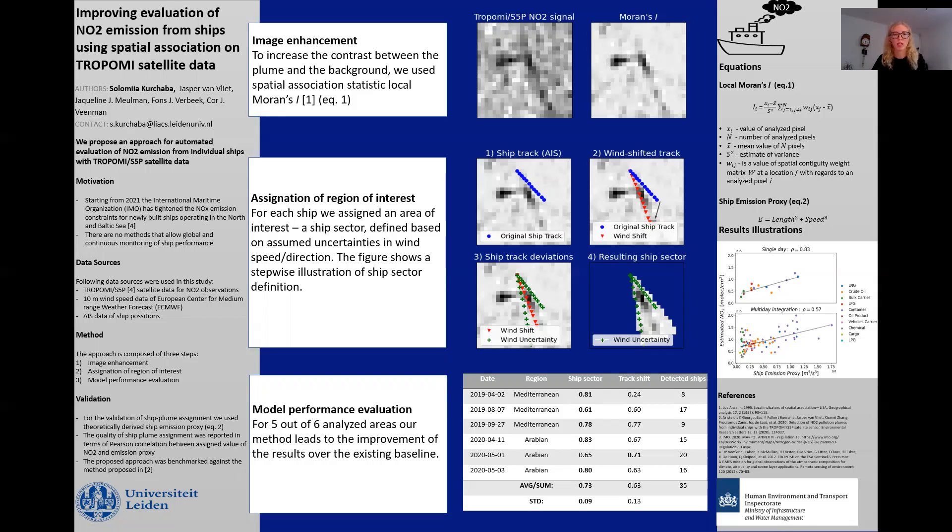Apart from TROPOMI data, in this study we use wind speed data from ECMWF and AIS data from which we can obtain positions of ships at the moment of satellite overpassing. In the paper, we address two problems.